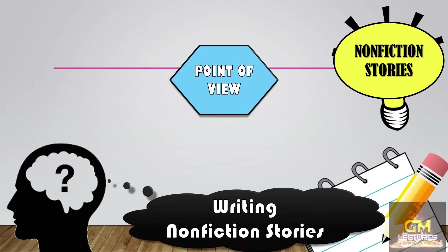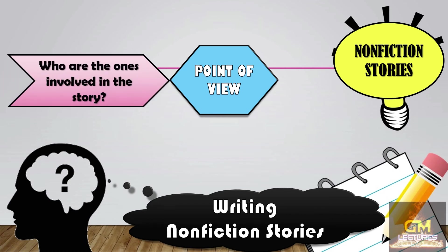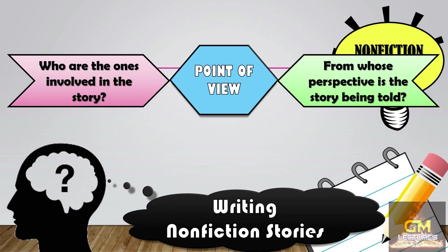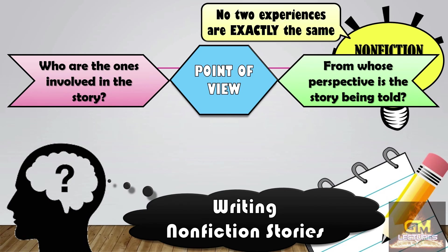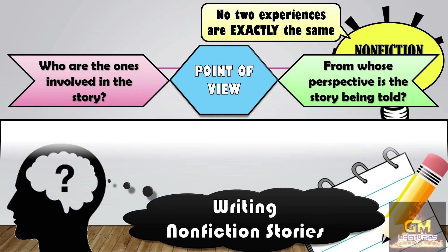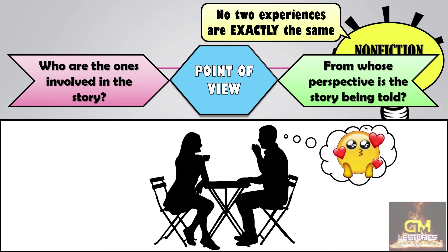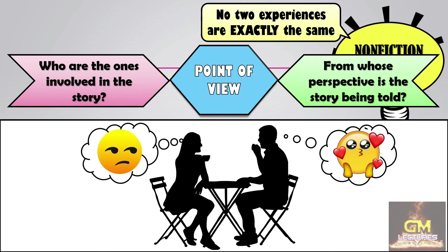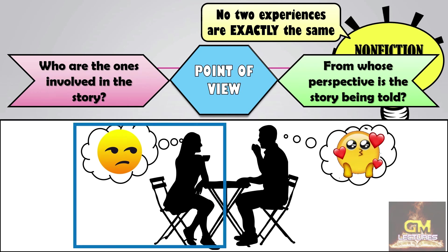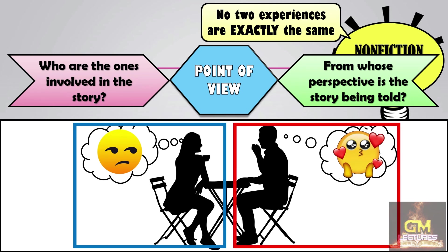At this point, we're going to talk about the point of view. When talking about the point of view, we have to consider first who is involved in the story and next from whose perspective the story is being told. This is important because no two experiences are exactly the same. For example, in a situation wherein a couple is going on a date — while both of them are experiencing the same situation, they might have different interpretations of what is going on. As such, the story would have a different meaning based on the perspective of whoever is telling it — it could be a boring story from the woman's perspective or a romantic story from the man's perspective.